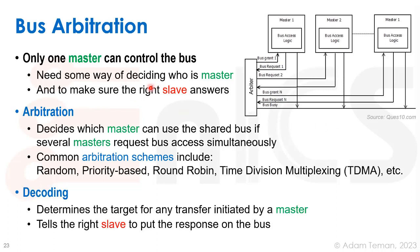Decoding is the other side of this — it decides which slave answers. When an operation is initiated on the bus, the decoder tells the appropriate slave it is being accessed. This is an alternative to having a comparator on each slave that monitors the bus and decides whether a transaction is addressed to it.